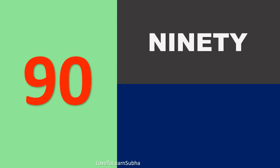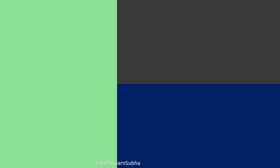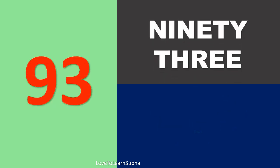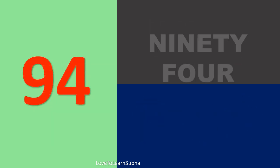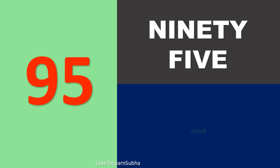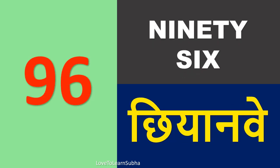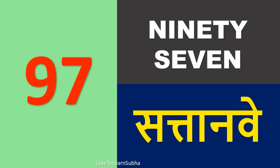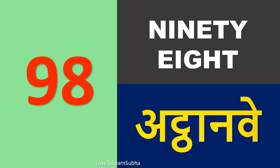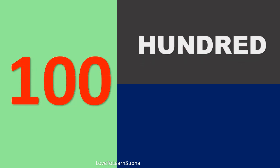89 – Navaasi, 90 – Nabbe, 91 – Ikyaanave, 92 – Baanave, 93 – Tiranave, 94 – Chauranave, 95 – Pachranave, 96 – Chianave, 97 – Satanave, 98 – Atthanave, 99 – Ninyaanave, 100 – Ek Sau.